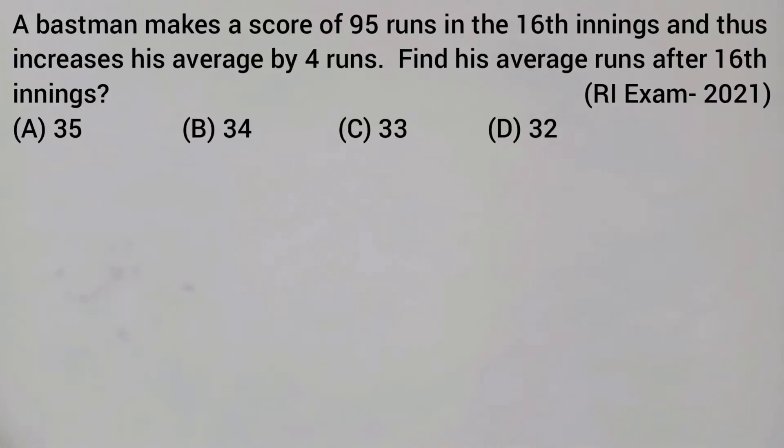A batsman makes a score of 95 runs in the 16th innings and thus increases his average by 4 runs. Find his average run after 16th innings.